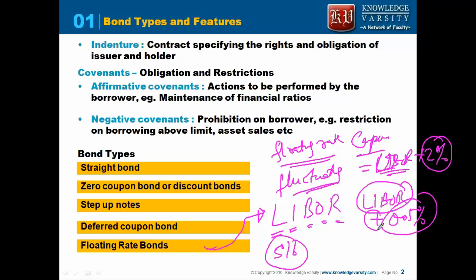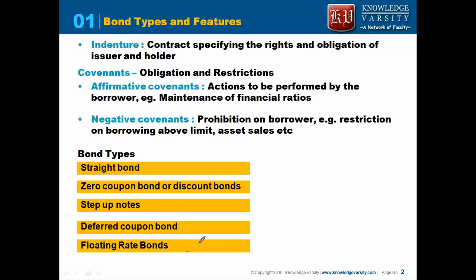However, it is not necessary that the spread has to be positive — it can be minus as well. Some bonds can say we will give half percent less than the LIBOR rate. So the floating rate bond coupon will be changing as per the LIBOR rate.